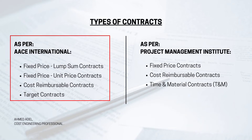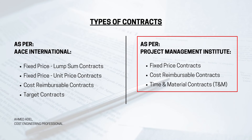In these two books they have talked about contracts. As per AACE International, we have four types: fixed price lump sum contracts, fixed price unit price contracts, cost reimbursable contracts, and target contracts. We will be looking into each of them in a moment.